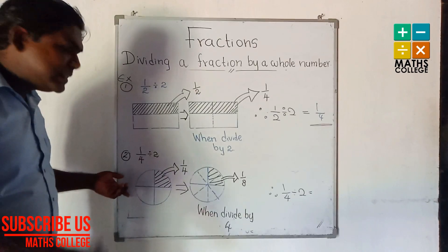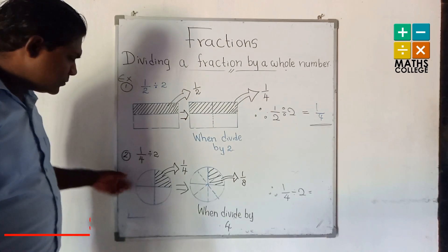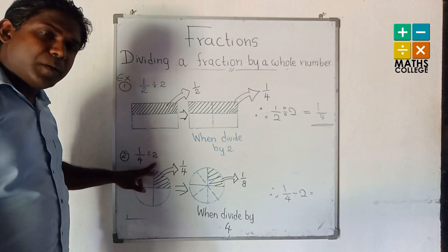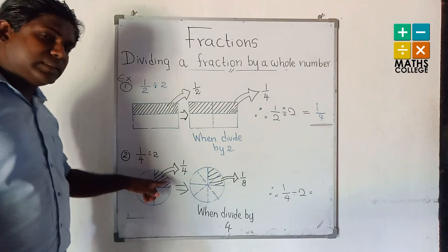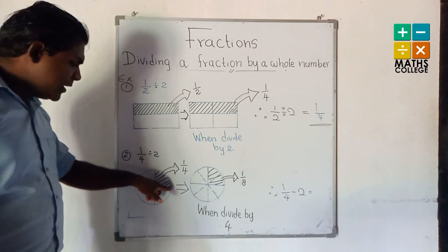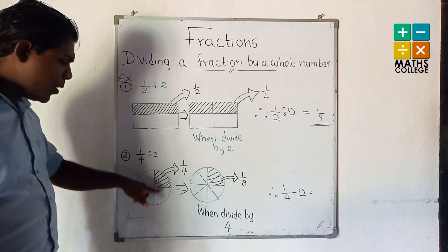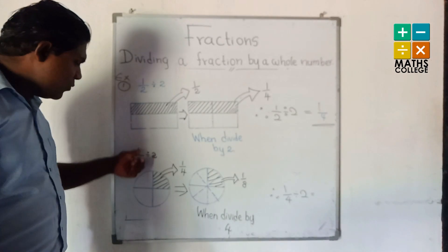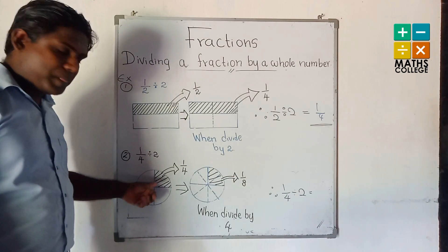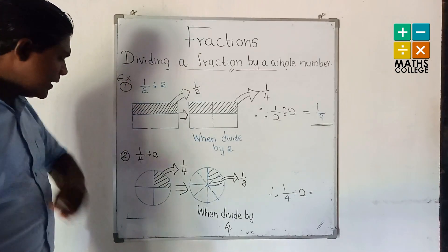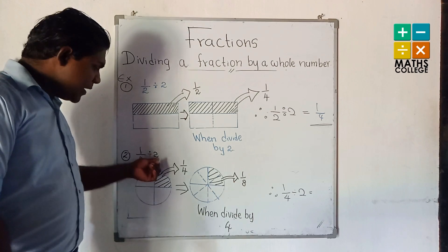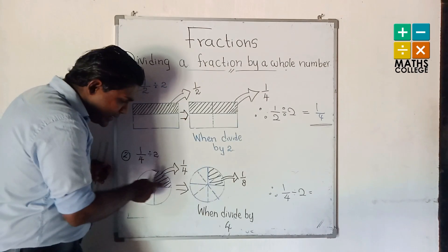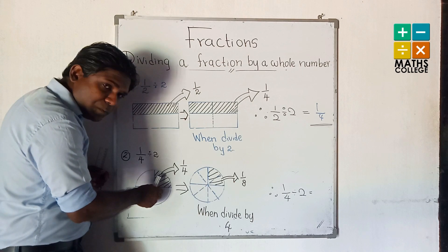We can explain further with a second example: quarter divided by 2. This whole circle is divided into 4 parts. 1 part is shaded. That means we have 1/4. Then this shaded part, we have to divide by 2 — that means this shaded part divided by 2.